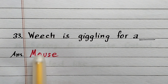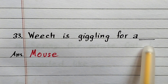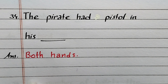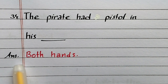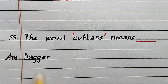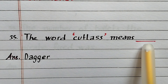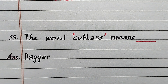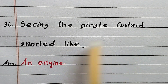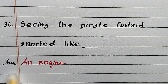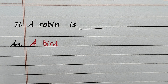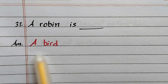Question number 33: Which animal is giggling? Answer: Mouse. Question number 34: The pirate had pistols in his ___? Answer: Both hands. Question number 35: The word 'cutlass' means ___? Answer: Dagger. Question number 36: Seeing the pirate, Custard snorted like ___? Answer: An engine. Question number 37: A robin is ___? Answer: A bird.